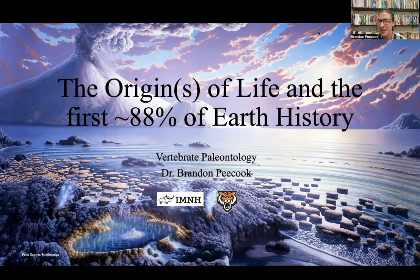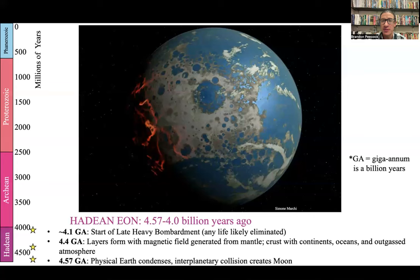In the last lecture, we went through outer space and got through the first eon. There are four eons in Earth's history: the Hadean, the Archean, the Proterozoic, and the Phanerozoic. That last bit, the Phanerozoic, is that 12% that almost all of this class is going to be about.